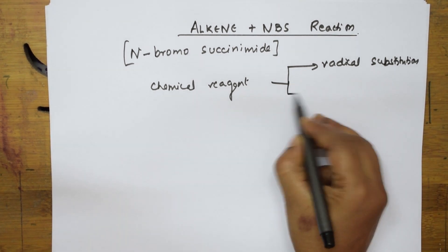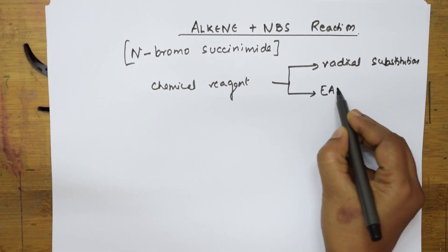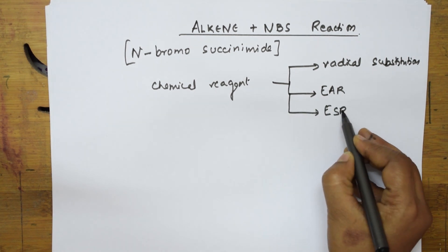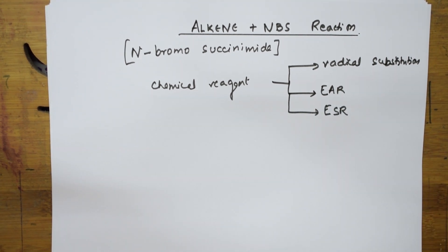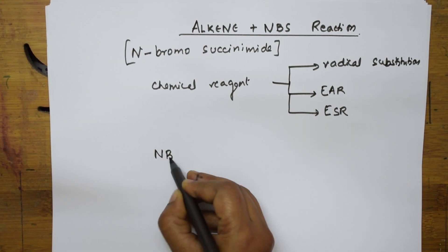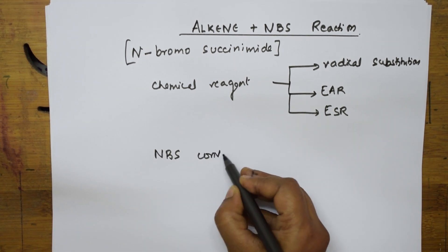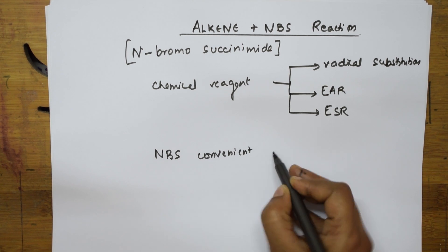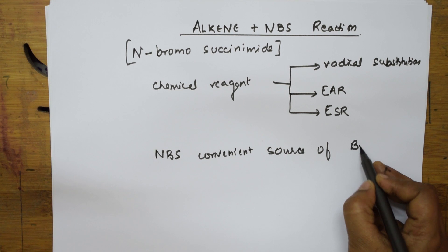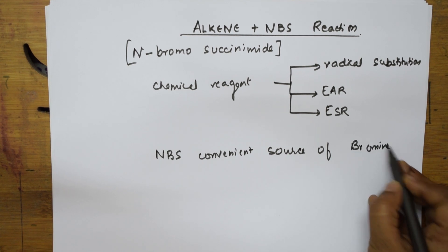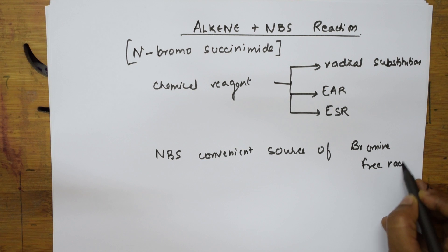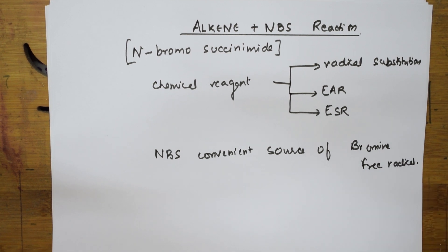I can also use NBS in electrophilic addition reactions and electrophilic substitution reactions. The basic idea is that NBS is a convenient source — it is a convenient source for supplying bromine free radicals. Wherever we require the formation of a bromine free radical, I will be using NBS.